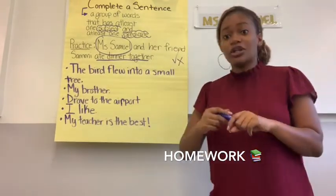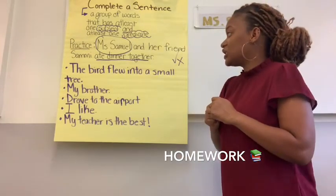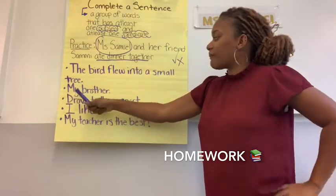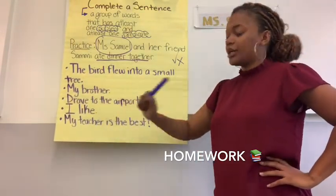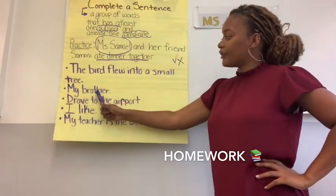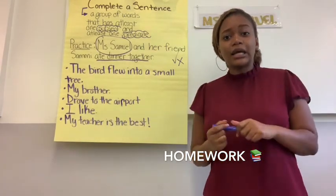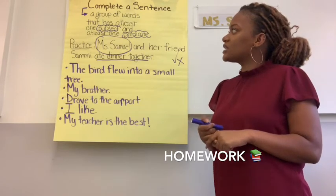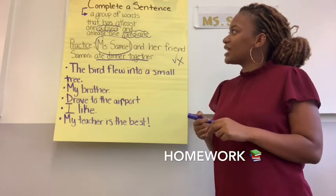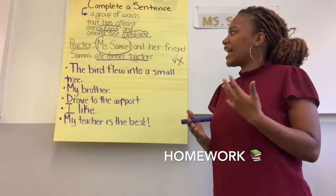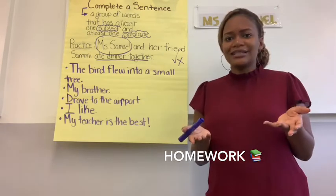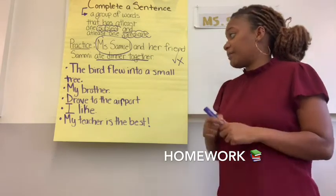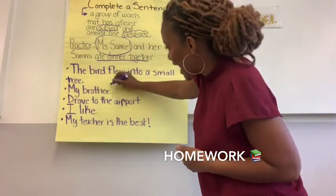Then I want you to figure out how you can complete it. Let's start with the second sentence. It says: my brother, period. Is that a complete sentence? Does it have a subject? It has a subject — at least one subject — but is it complete? Does it have at least one predicate? I see that it has a subject, but it doesn't have a predicate. So that's not a complete sentence, so I'm going to go ahead and give that an X.